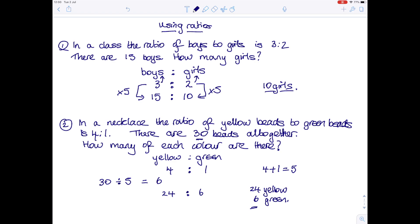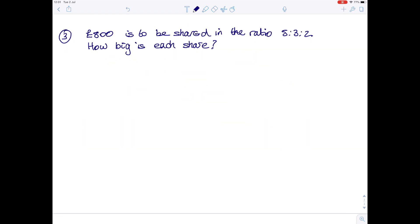Very similar question: this time we have £800 to be shared in the ratio 5 to 3 to 2, and we want to find out how big each share is. So again, start with the ratio 5 to 3 to 2. If you add those parts together, 5 parts and 3 parts and 2 parts give you 10 parts.